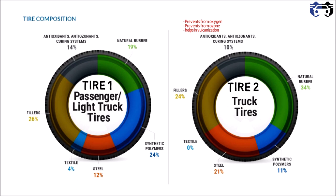Natural rubber is 34% in Tire 2 and 19% in Tire 1. It helps in tear and fatigue crack resistance. Synthetic polymers are 11% in Tire 2 and 24% in Tire 1. They affect the overall performance of the vehicle and are impermeable, meaning they help in maintaining the inflation pressure.